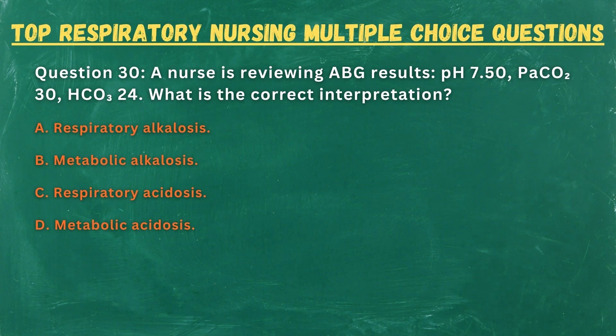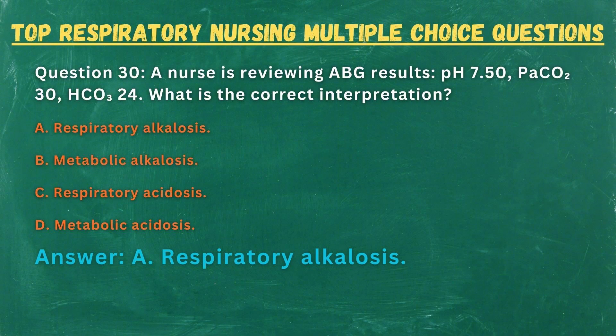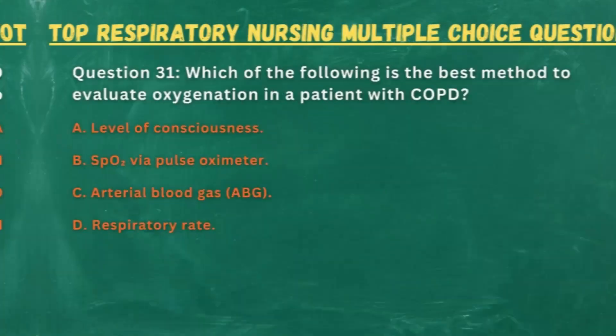Question 30. A nurse is reviewing ABG results: pH 7.50, PaCO2 30 mmHg, HCO3 24. What is the correct interpretation? A. Respiratory alkalosis. B. Metabolic alkalosis. C. Respiratory acidosis. D. Metabolic acidosis. Answer: A. Respiratory alkalosis.